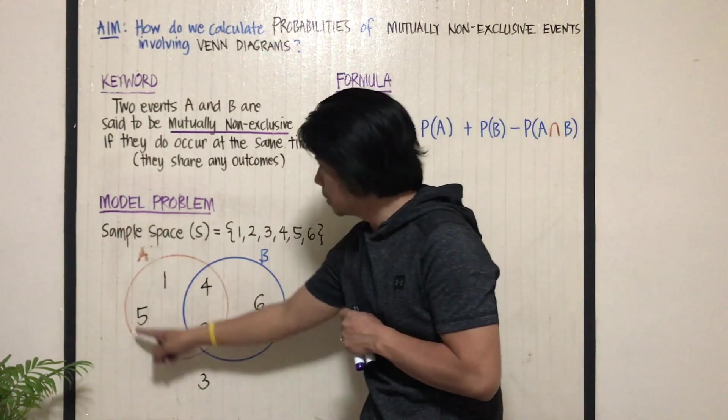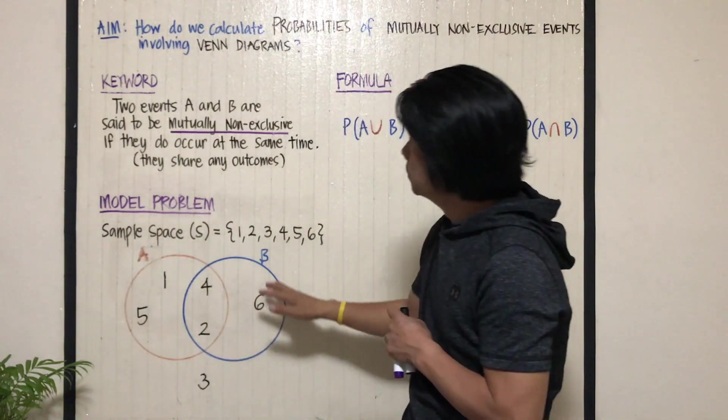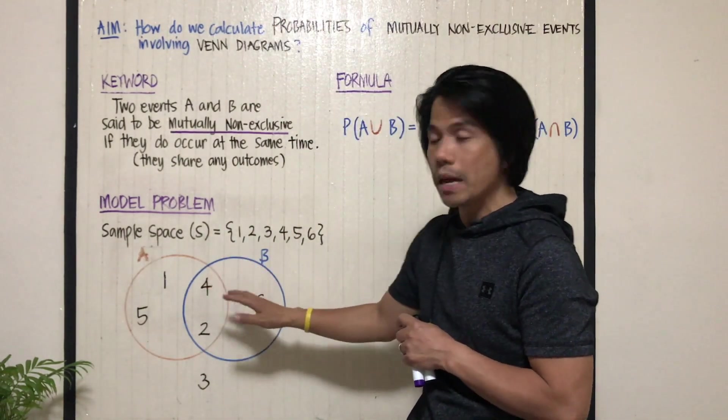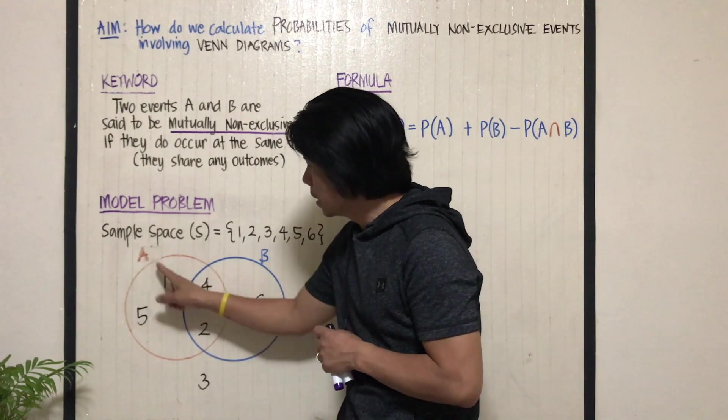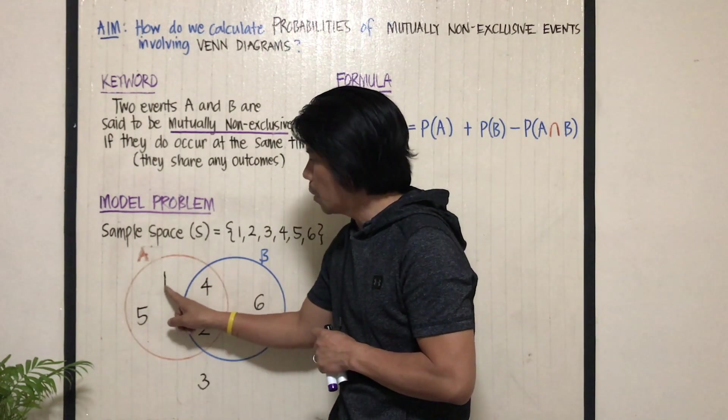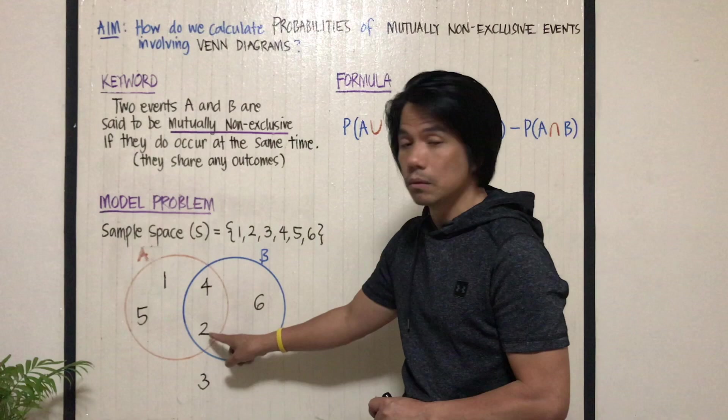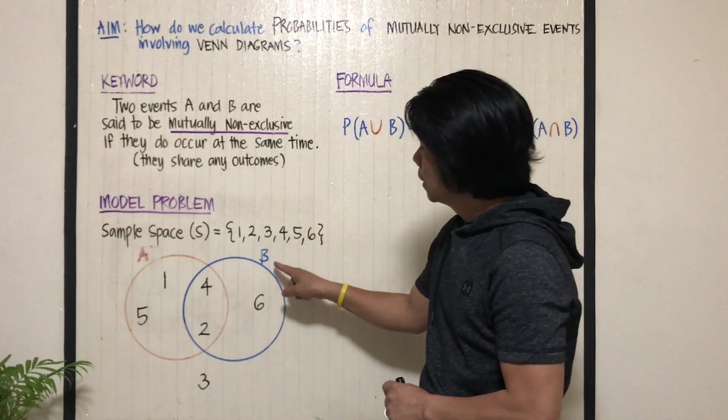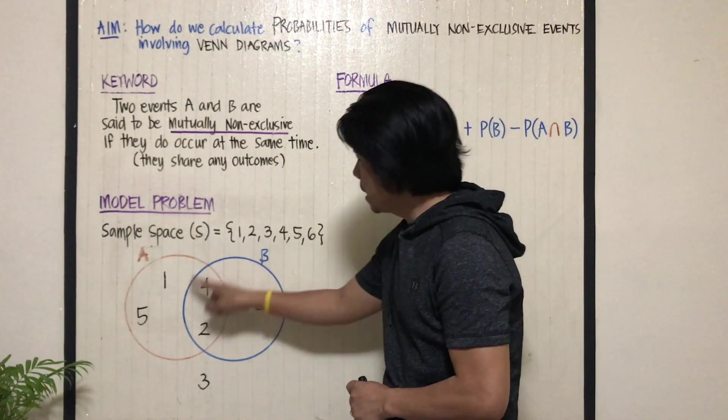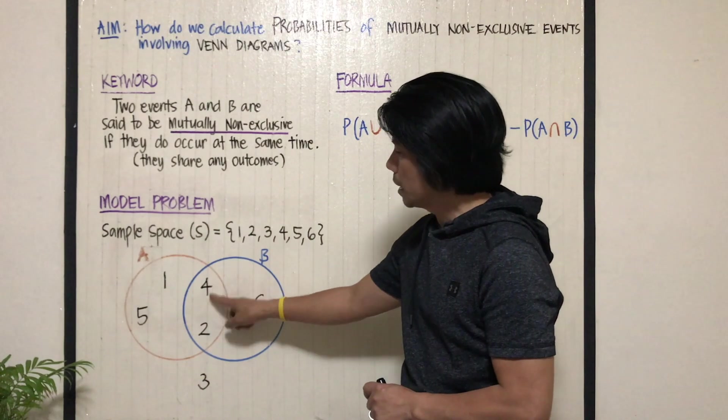This is a good example of mutually non-exclusive events. If you notice, circle A contains the numbers 1, 5, 4, and 2, while circle B contains 6, 4, and 2.